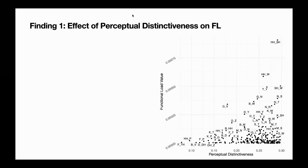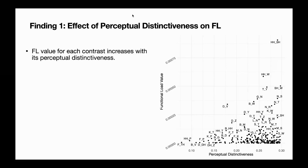The first major finding is that functional load for each contrast increases with its perceptual distinctiveness. For example, one phoneme pair has high perceptual distinctiveness and the highest functional load, while another phoneme pair has the lowest perceptual distinctiveness and low functional load.